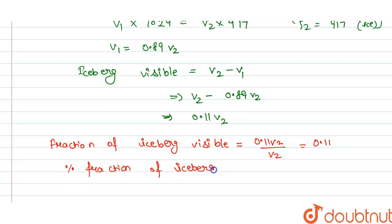The fraction of iceberg visible is 0.11. So the percentage fraction of iceberg visible is 11 percent. This is our answer for the question: 11 percent.